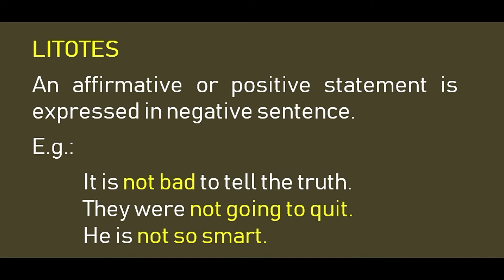Litotes: an affirmative or positive statement is expressed in a negative statement — what can be said in a positive way is expressed as a negative sentence. For example, 'it is not bad to tell the truth' — this can be written as 'it is good to tell the truth,' but it is expressed in the negative form. Other examples: 'they were not going to quit' and 'he is not so smart.' A positive statement converted into a negative sentence is known as litotes.